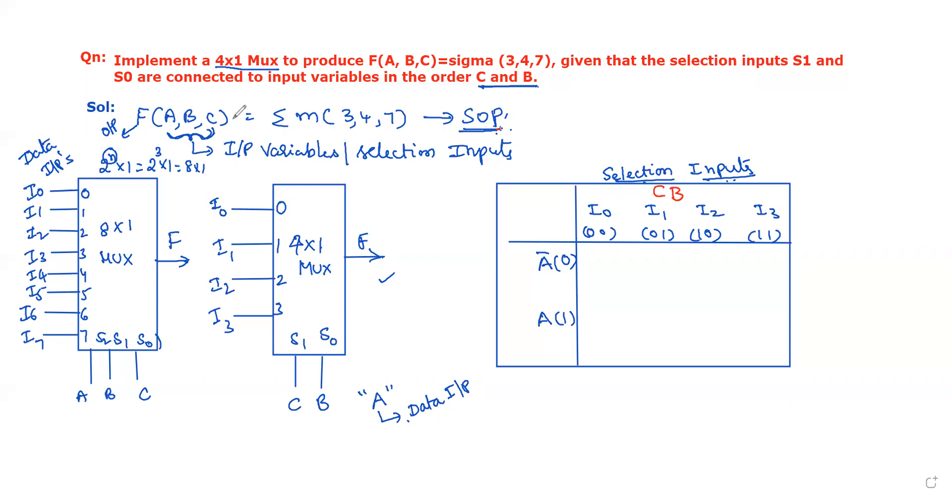To solve this problem, first let us take the given Boolean expression f(A,B,C) = Σm(3,4,7). Sigma means summation operator and the numbers are taken as min-term numbers, written in SOP form. ABC are input variables also called selection inputs.